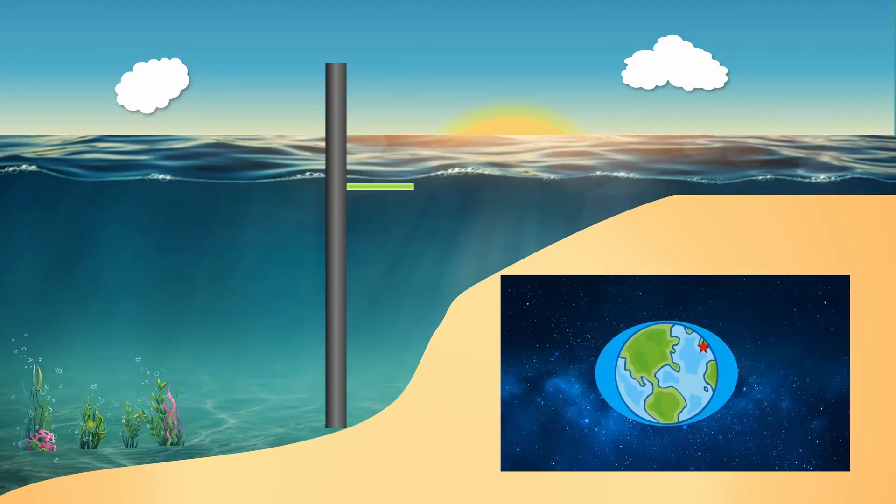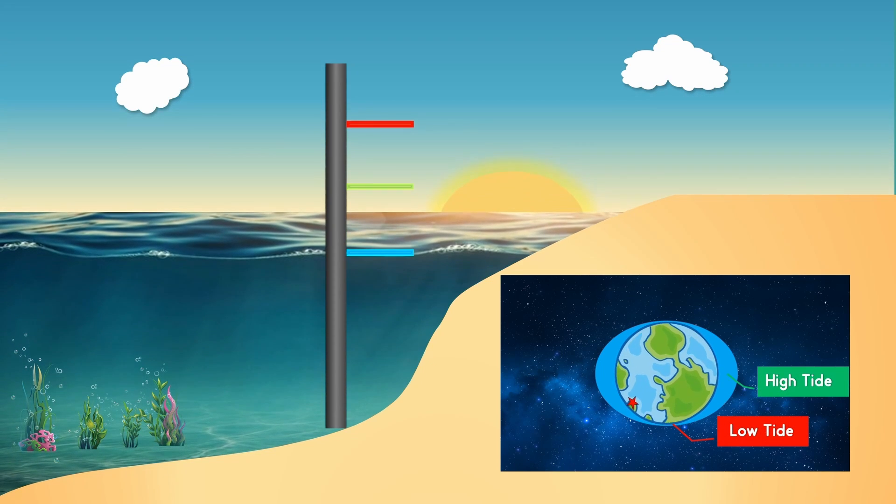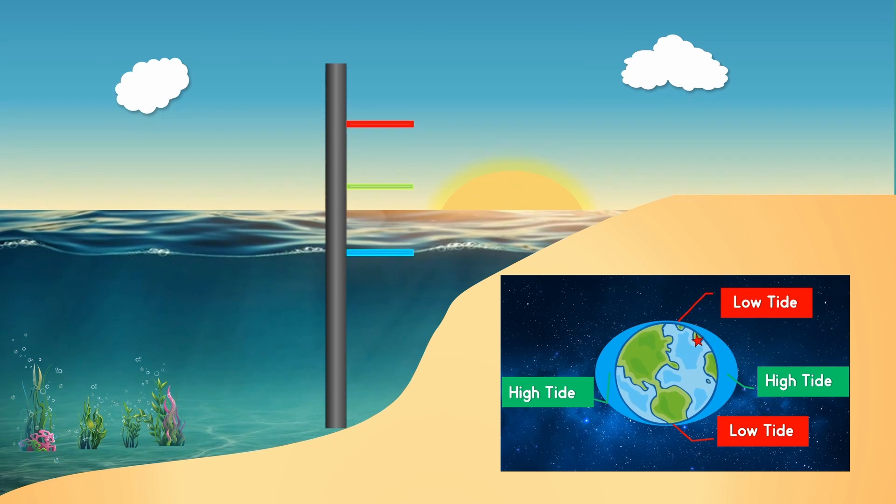Most shorelines experience this cycle. However, some areas have just one of each. In this tidal cycle, we have a high tide followed by low tide, which is followed by high tide and again low tide. This cycle repeats continuously.